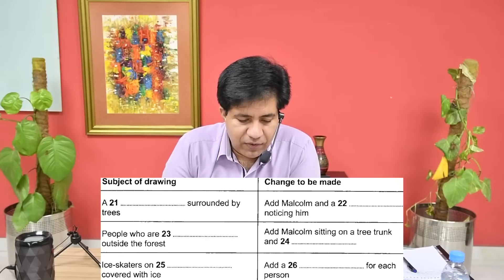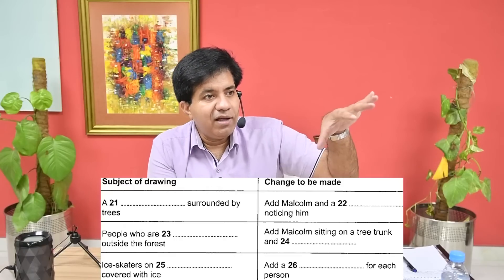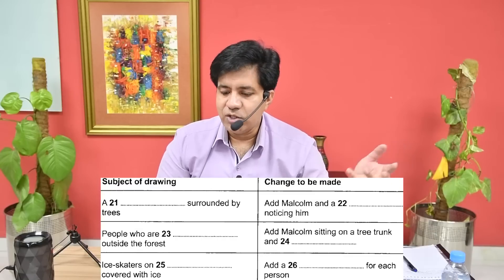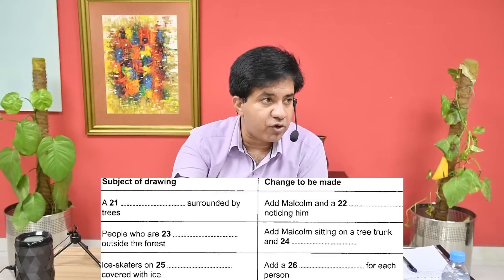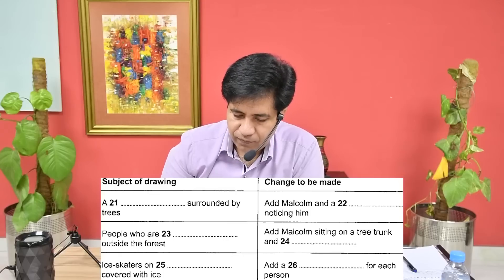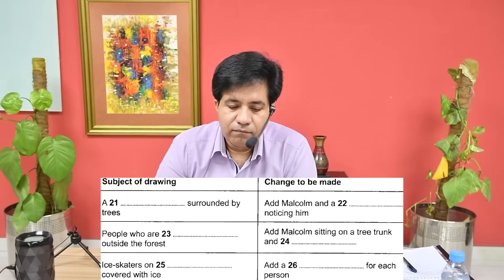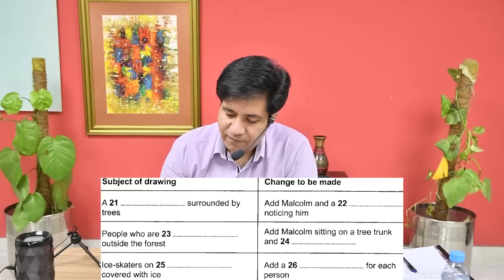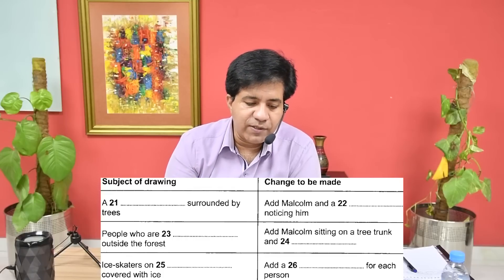Question 24: add Malcolm sitting on a tree trunk and dash. Malcolm is sitting and doing something — sitting and eating, sitting and reading, sitting and something. It's going to be another -ing form. Could you add Malcolm to it without changing what's already there? What about having him sitting on the tree trunk on the right of the picture? Do you want him watching the other people? No — he's been left out of all the fun, so I'd like him to be crying. Answer is 'crying.'